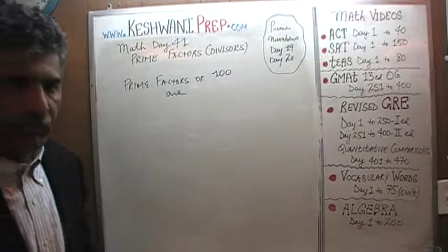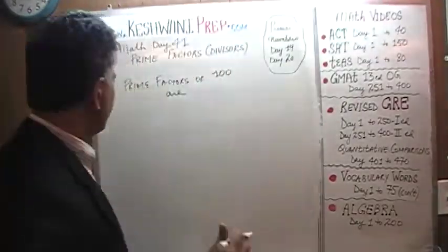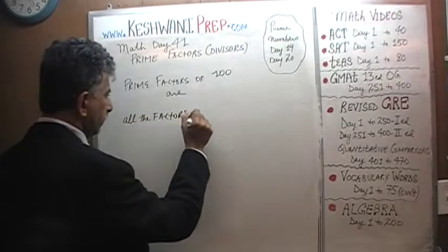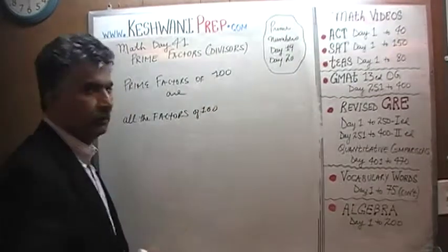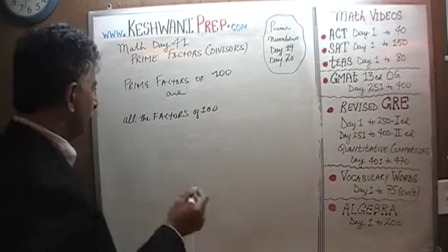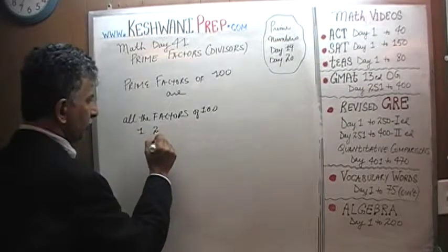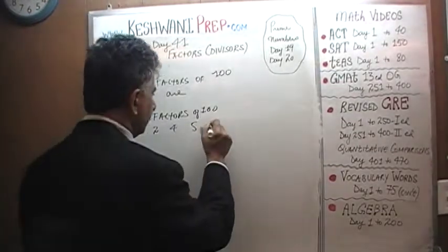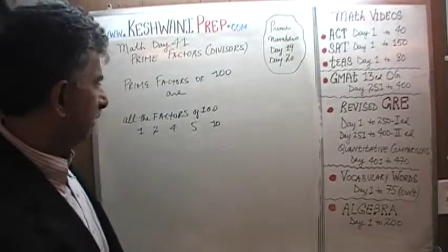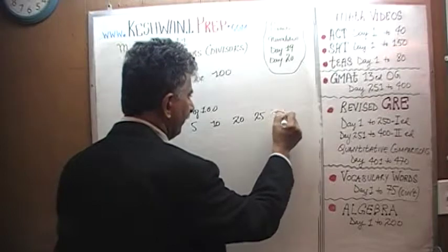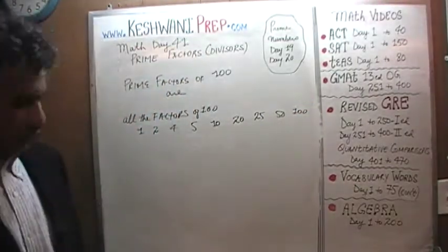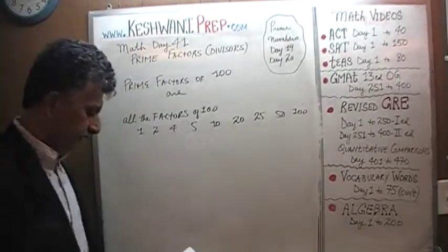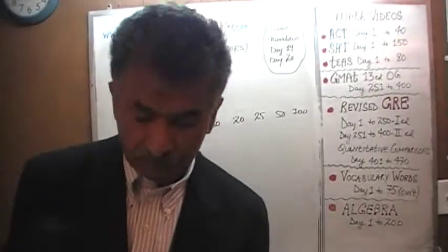Now 100 — since we have been listing all the factors first, that's what we'll do. The factors of 100 are: 1, 2, 4, 5, 10, 20, 25, 50, and 100. Out of all those factors — 1, 2, 4, 5, 10, 20, 25, 50, and 100 — how many do you suppose are prime numbers?